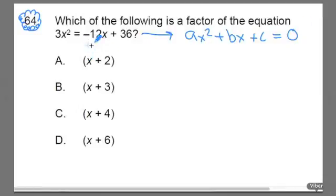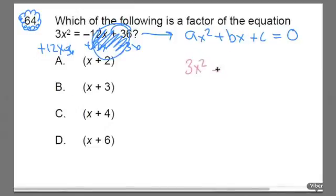We can do that by adding 12x to both sides and subtracting 36 from both sides. And these terms cancel out and become 0. And what you're left with is 3x squared plus 12x minus 36 equals 0.